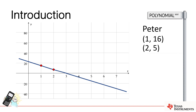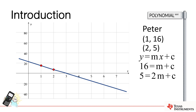Let's start with an easier problem. Suppose I only wanted to do the first two letters of my name, the P and the E. That would give me two points, so I could do that with a straight line. To work out that equation, I'll start with the general equation of a straight line in the form y = mx + c. If I substitute in the first point (1, 16), I end up with 16 = m + c. Now I can substitute in the second point. I've got two equations with two unknowns, m and c. Solving simultaneously gives m = −11 and c = 25. My straight line has a negative gradient, and the y-intercept looks to be somewhere between 20 and 30.